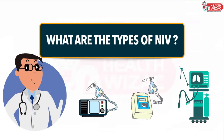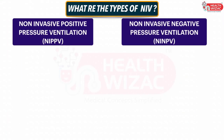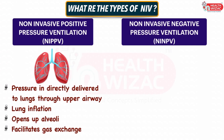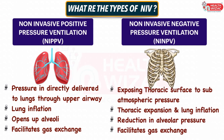What are the types of NIV? NIV is primarily of two types: non-invasive positive pressure ventilation and non-invasive negative pressure ventilation. In non-invasive positive pressure ventilation, pressure is directly delivered to lungs through the upper airway, causing lung inflation and helping to open up the alveoli, which facilitates gas exchange. Whereas in non-invasive negative pressure ventilation, the thoracic surface is exposed to sub-atmospheric pressure leading to thoracic expansion, lung inflation, reduced alveolar pressure, and facilitated gas exchange.